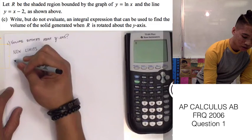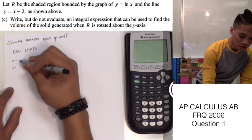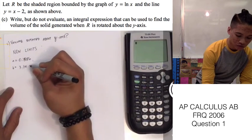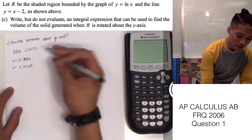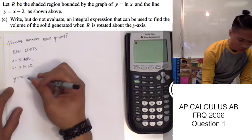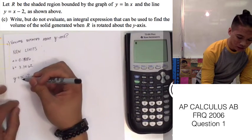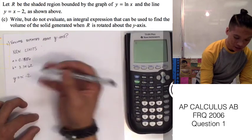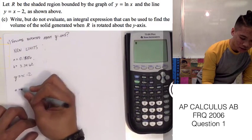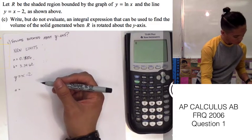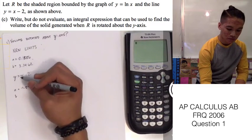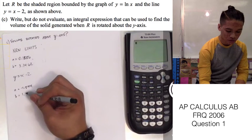Our former values of a and b are x equals 0.1586 and x equals 3.1462. We'll use the simpler function y equals x minus 2 and plug in our x values to get our new y limits. The new a is negative 1.8414, and when we plug in b we get 1.1462.